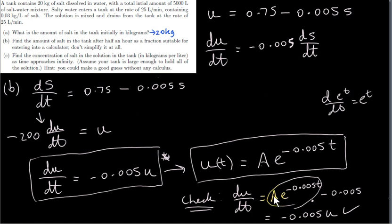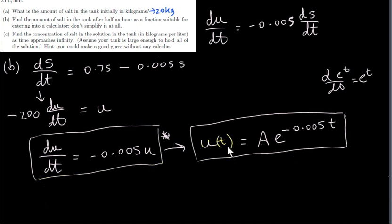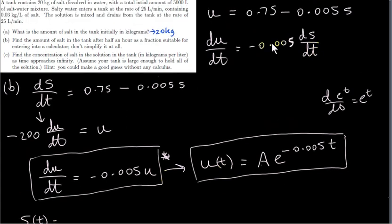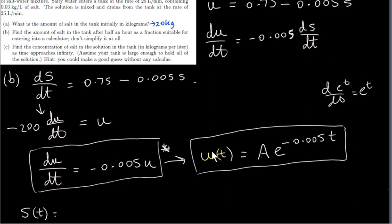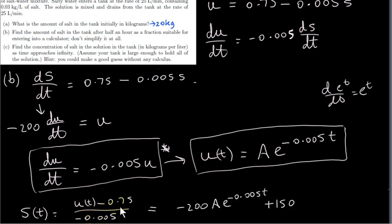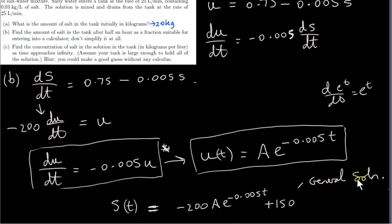You can see that a can be any constant — that constant just sits there through the differentiation. Now that's u(t), but of course we don't want u(t), we want s(t). s is related to u by the original substitution: to get s(t) we take u(t), subtract 0.75, and divide by minus 0.005. So u divided by 0.005 gives minus 200 times u, and 0.75 divided by 0.005 gives plus 150. This is our general solution for the differential equation.